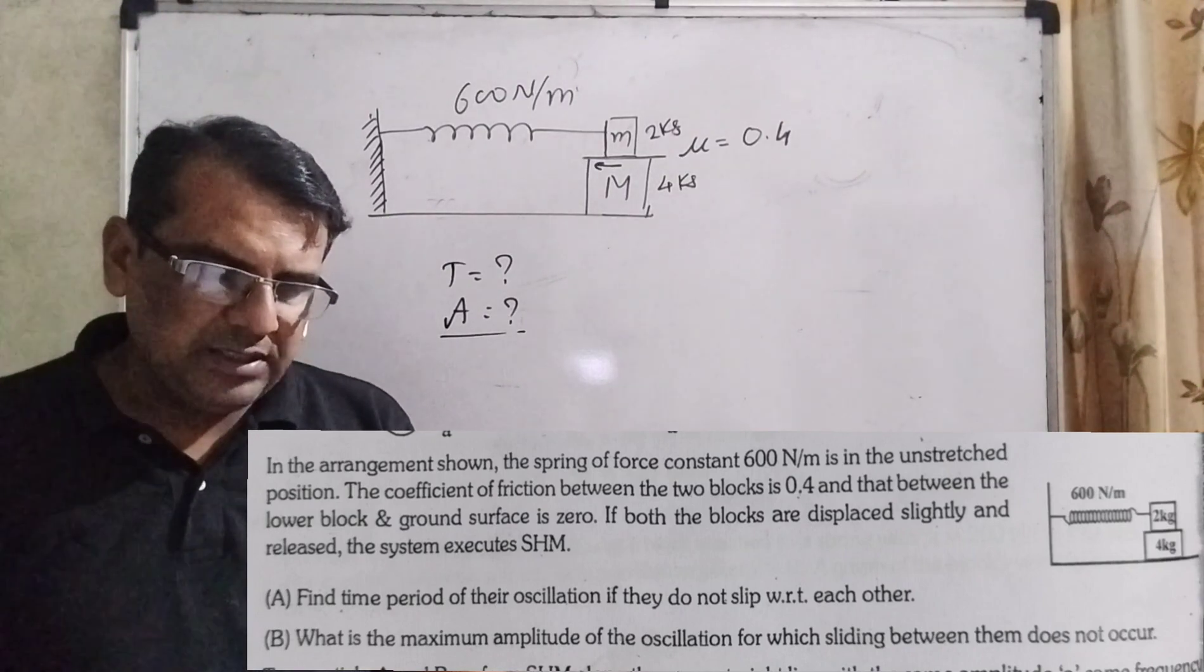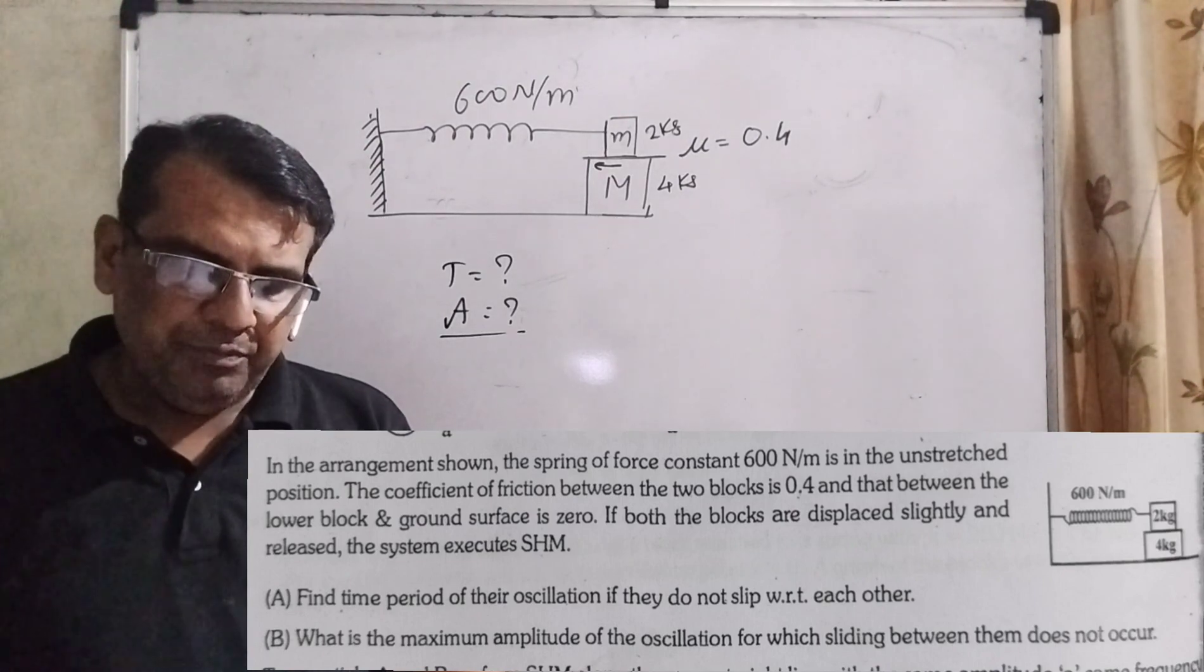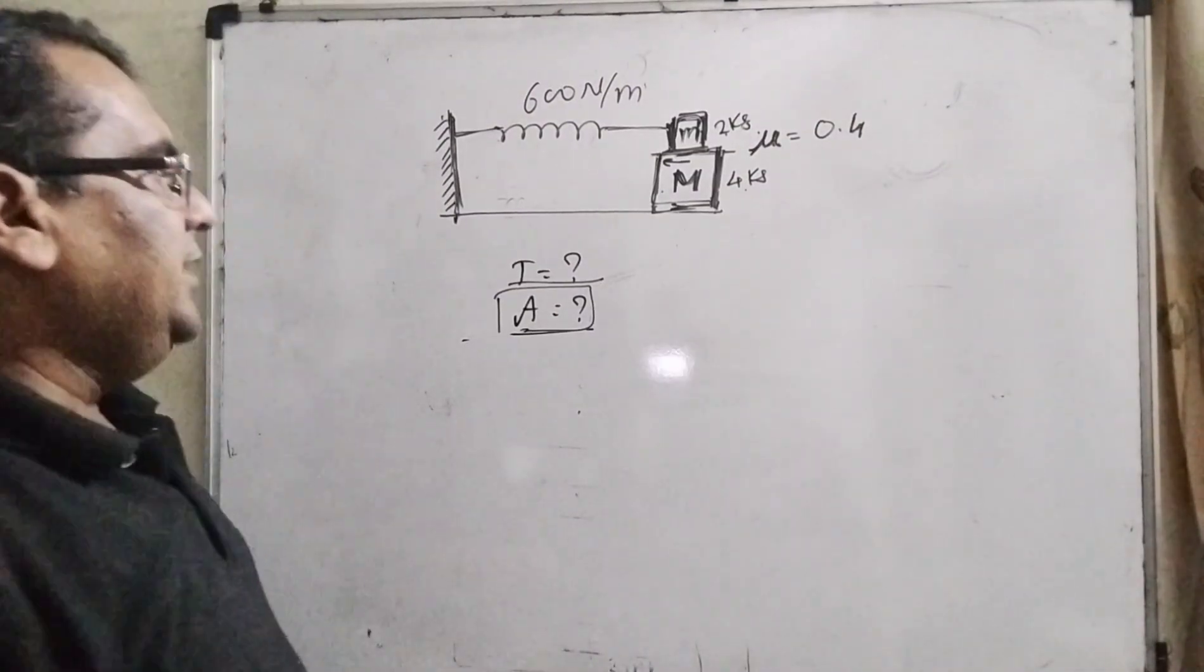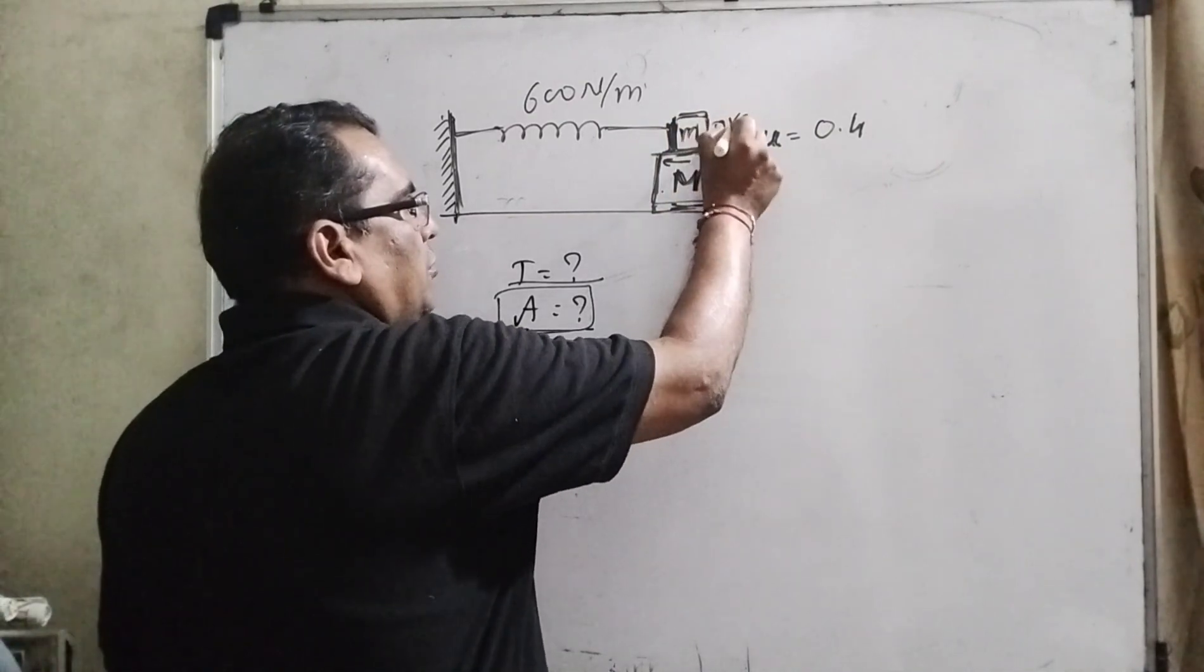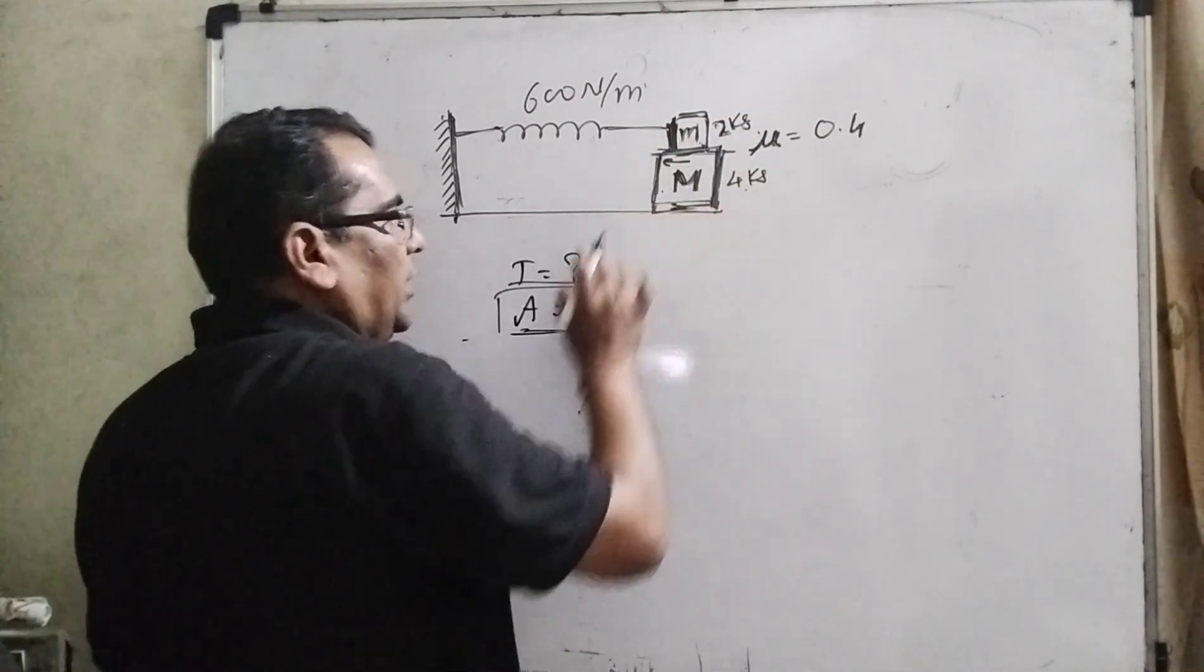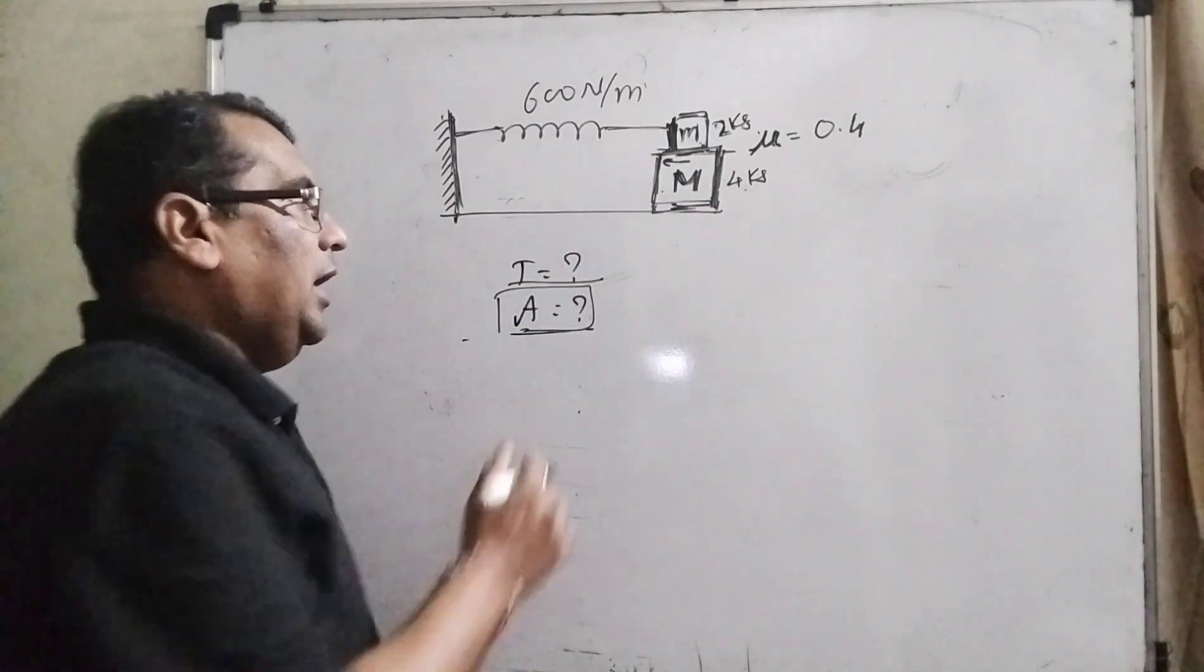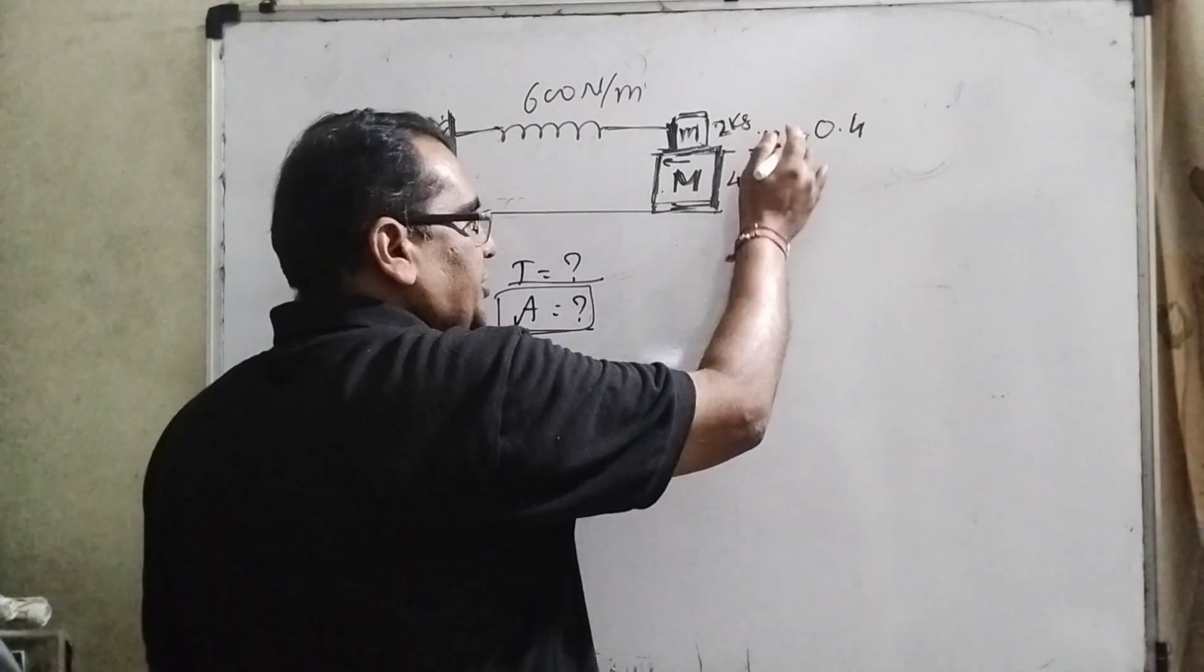And (b) What is the maximum amplitude of the oscillations for which sliding between them does not occur? Here we see that this small block which has mass 2 kilogram is placed over a bigger block which has mass 4 kilogram.